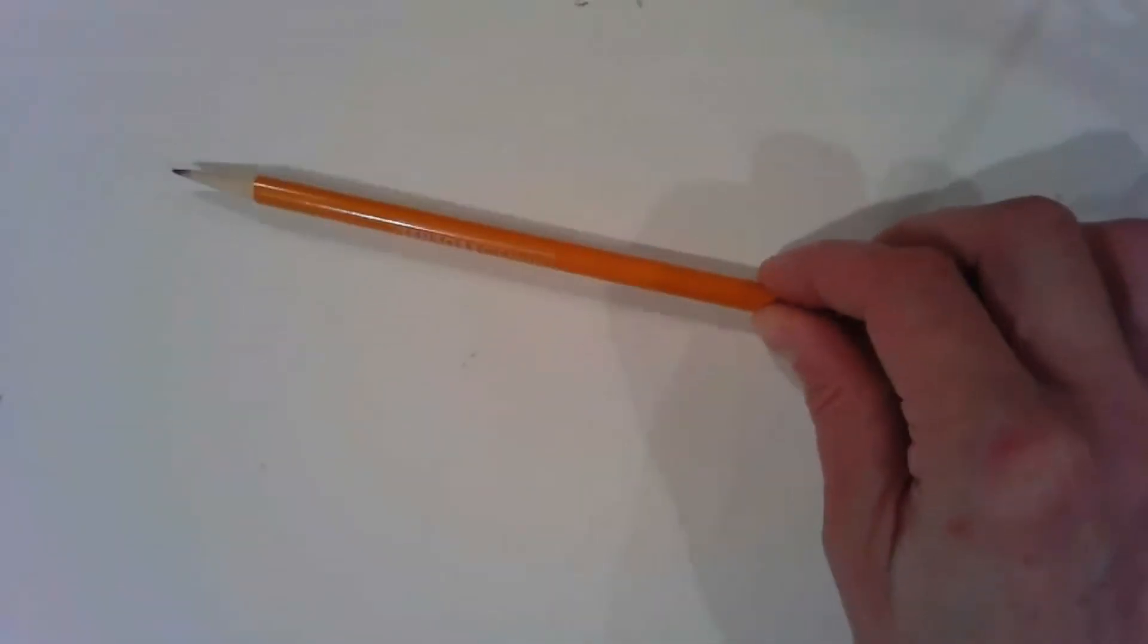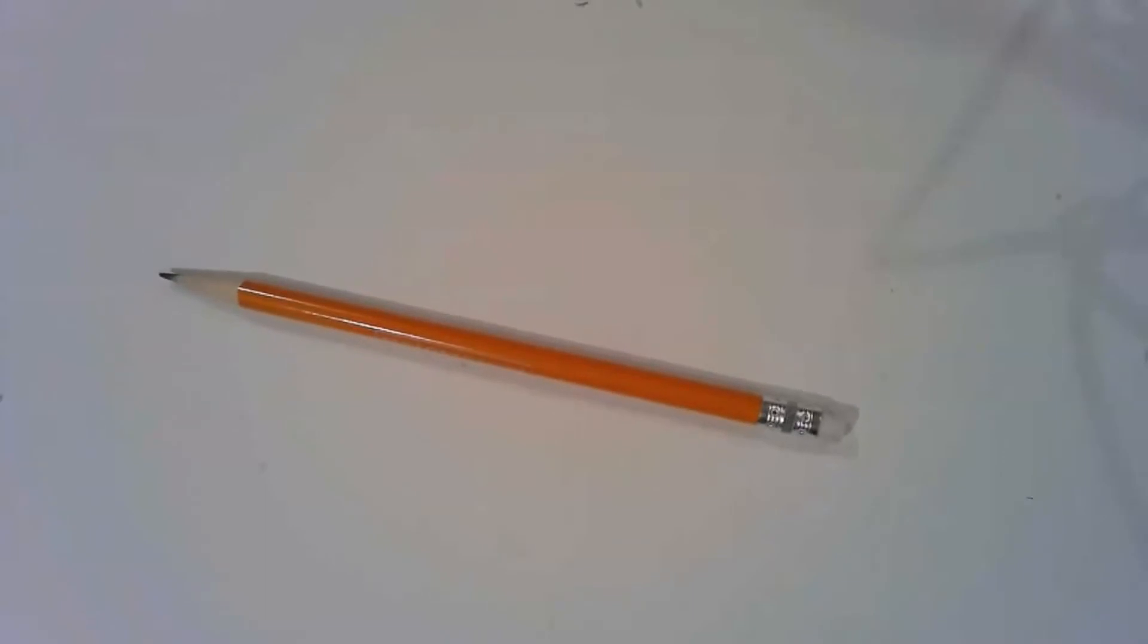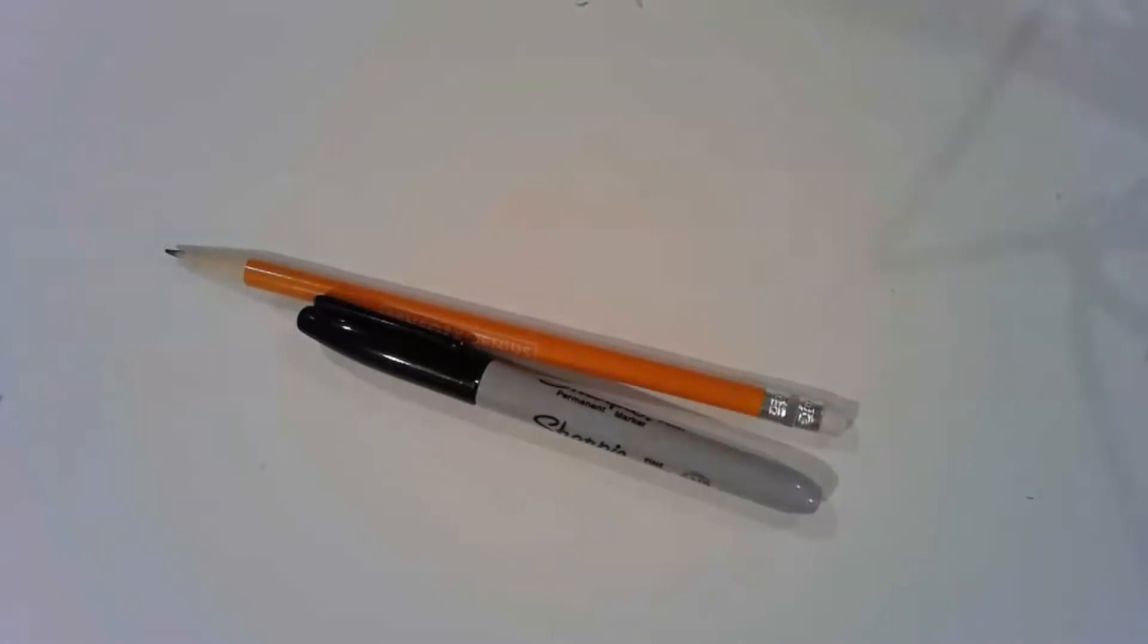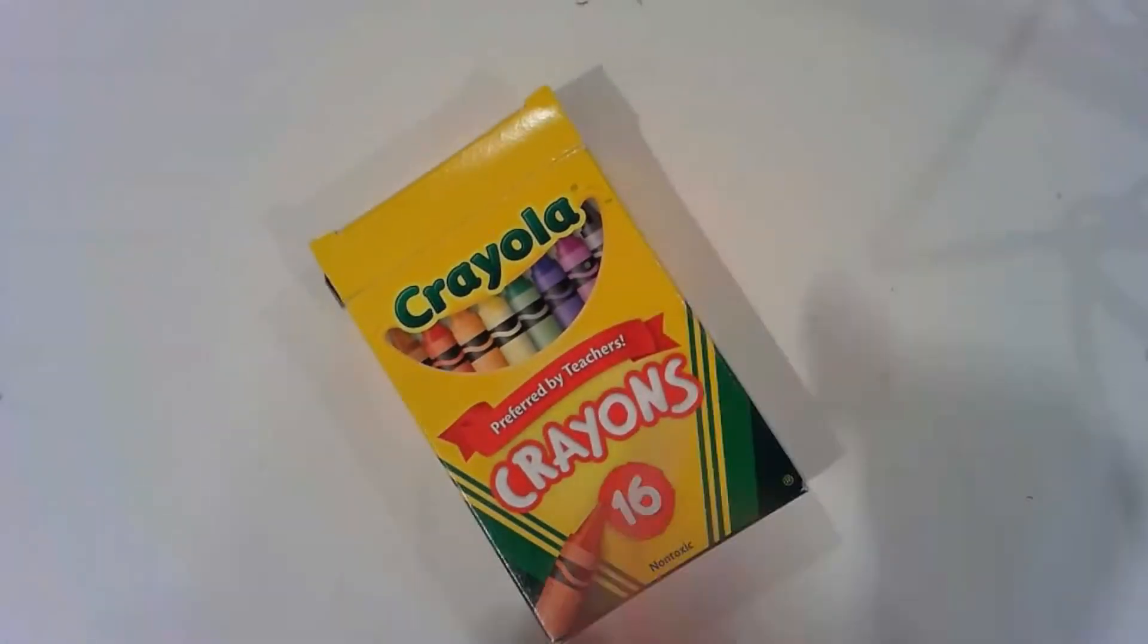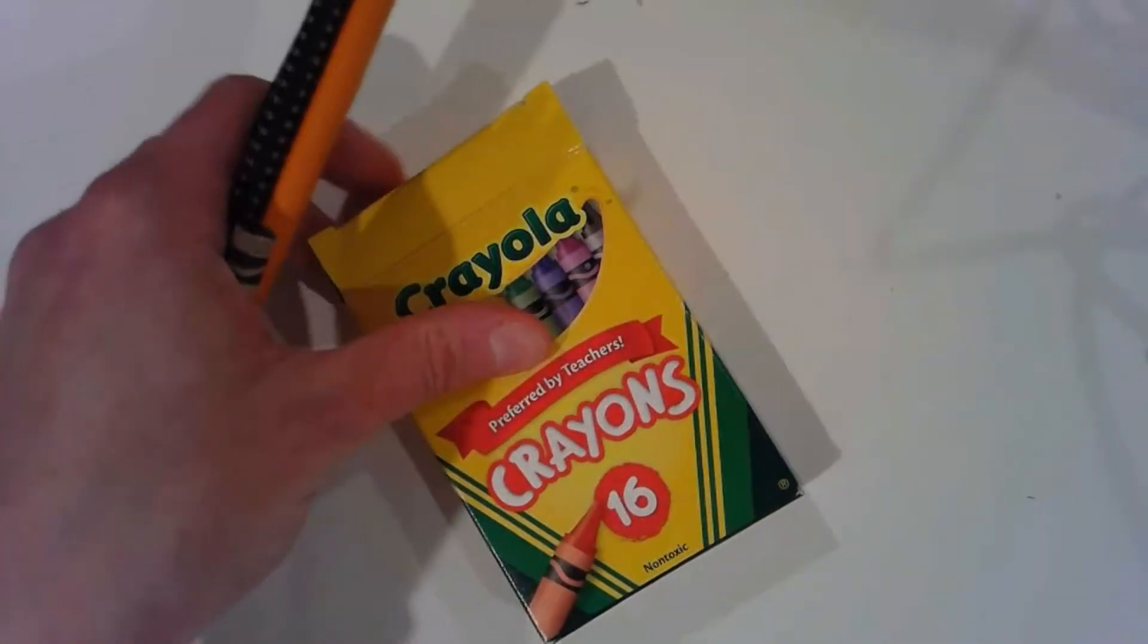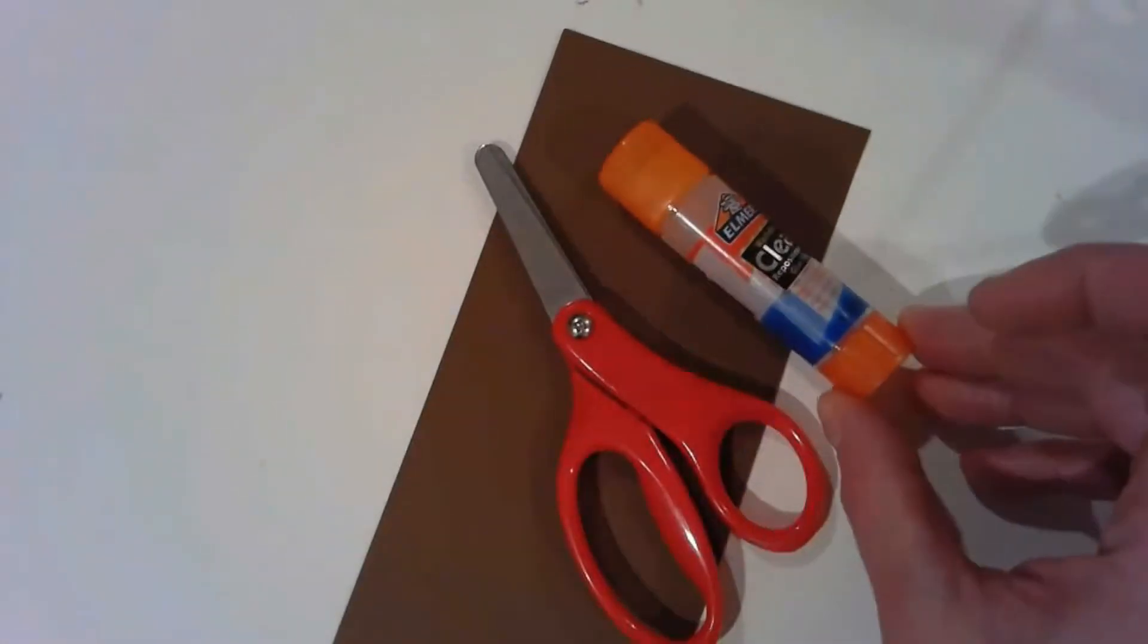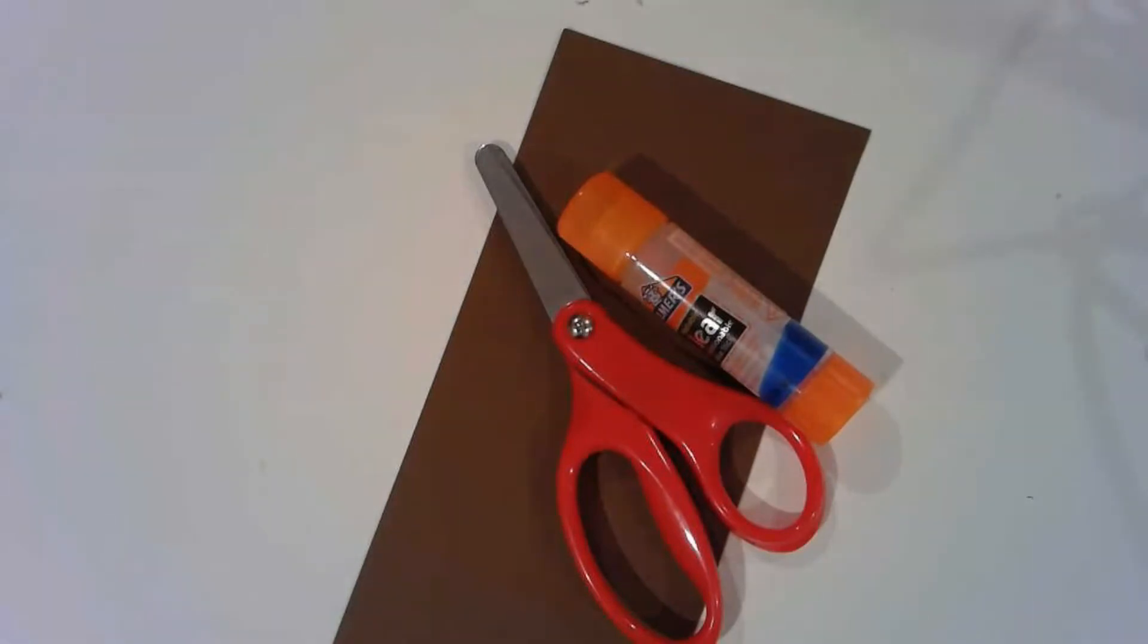For this project you're going to need a pencil and something that you can trace with black. It can be a marker, and I like to use permanent marker or crayon would be my second choice. Make sure it's black. You can also use a black colored pencil. In order to add color, you can choose crayons, you can use markers, or if we were in the classroom, what I would choose is watercolors. Just use what you have at home. The last thing that we're going to need is brown or black paper, kid scissors, and some glue. If you have only Elmer's white glue, that will work as well.